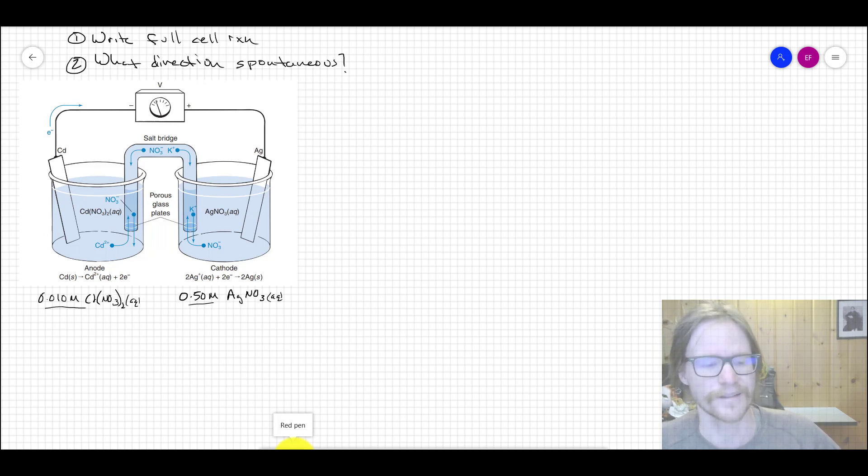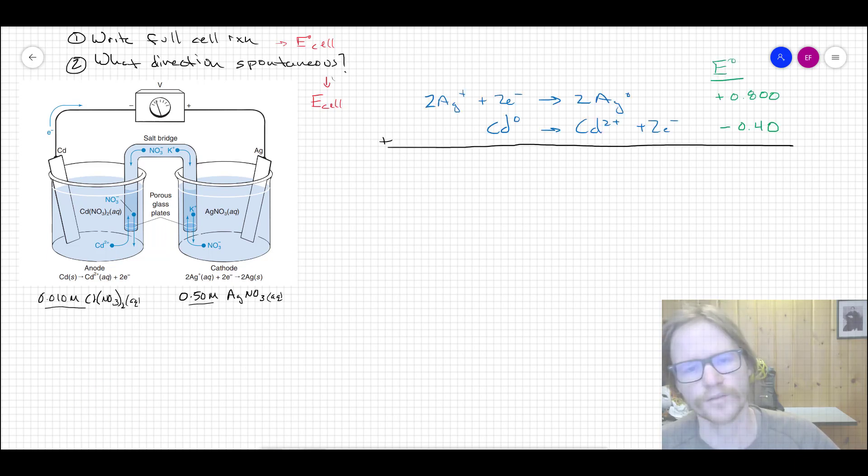We need to figure out E°cell in this first step when we have the full reaction, and then we'll figure out Ecell from the Nernst equation. So the two half reactions we have here are silver being reduced and cadmium being oxidized, just like we had before. It wouldn't matter actually either way you write this, as long as you're writing one as a standard reduction and one is an oxidation. That's just going to flip your Ecell, and it's still going to tell us ultimately which direction is spontaneous because one direction will be and one direction won't be.